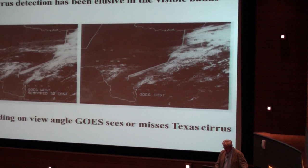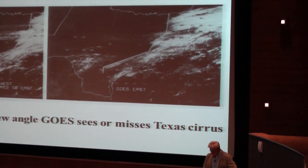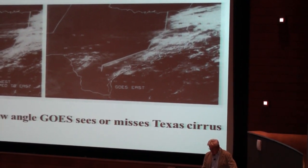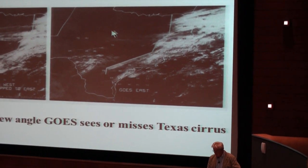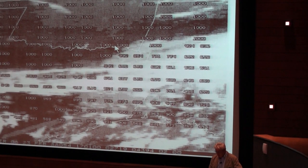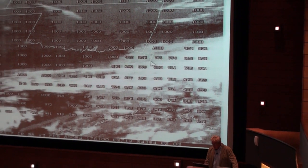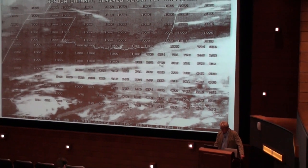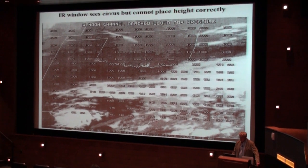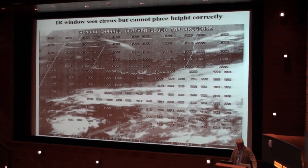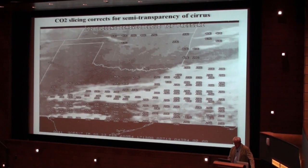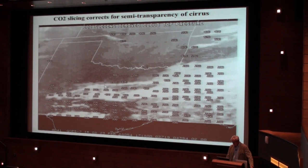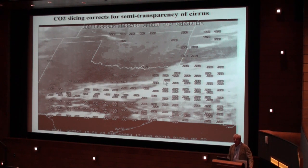Here's an old slide Don and I put together. This is GOES west and east looking at cirrus. Depending on the angle, you'll see it or you won't. If you only use the infrared window, you're going to totally miss where that cirrus is — you're going to put it very low in the atmosphere. That's one observation with two unknowns. But with CO2 slicing, you get enough measurements to solve the cloud emissivity and cloud fraction, the cloud top pressure, and you're correcting for radiation coming from below the cloud.